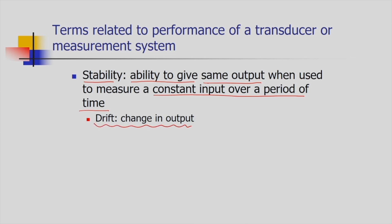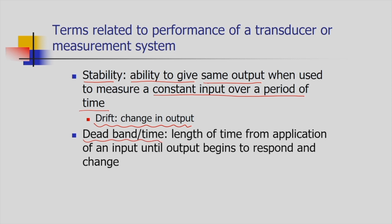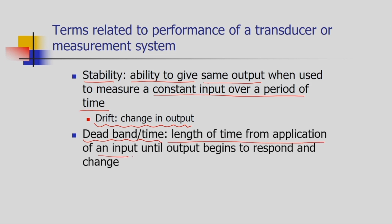The change in output despite constant input is measured by a parameter called drift — the output is diverting or drifting from its target value. Dead band or dead time refers to the situation where the input is applied to the system but the system does not respond immediately. The time from application of an input until the output begins to respond is called the dead band or dead time.